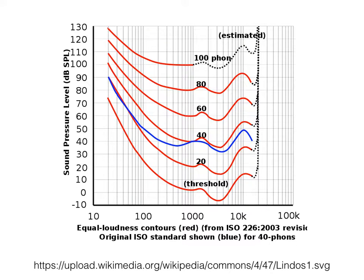There are two ways to interpret the sensitivity. First, frequency. We are particularly poor at hearing frequencies below 100 Hz and above 10,000 Hz. The range between 1.5 kHz and 5 kHz is the area we perceive as the loudest, with the maximum being around 3.5 kHz.